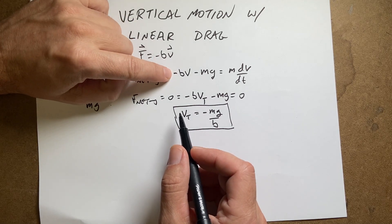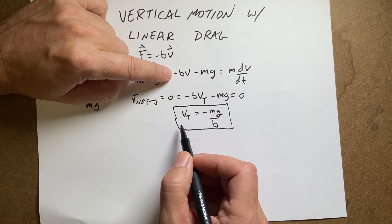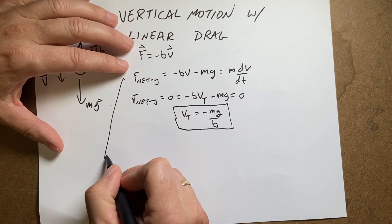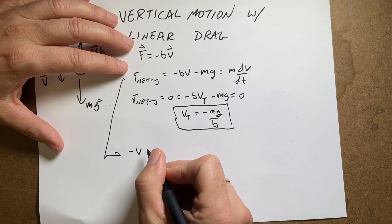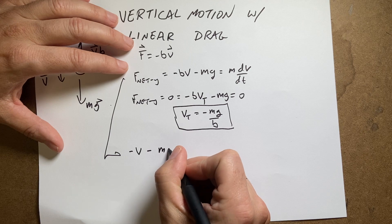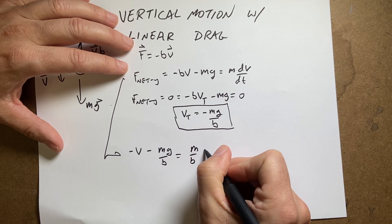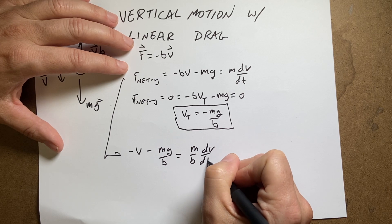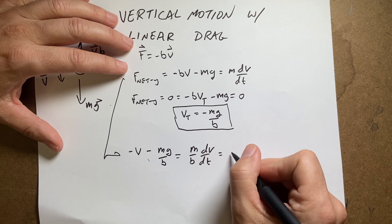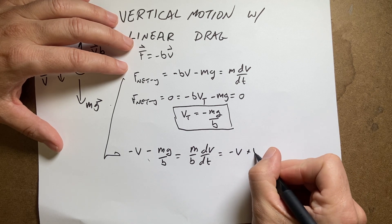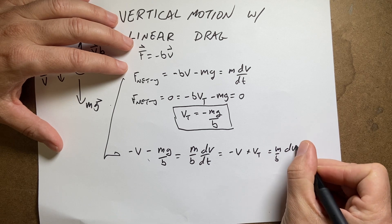Now let's look at this equation. I'm going to divide everything by B on both sides. This becomes: negative V minus mg/B equals (m/B) dV/dt. And negative mg/B is the terminal velocity, so I can write that as: negative V plus VT equals (m/B) dV/dt.